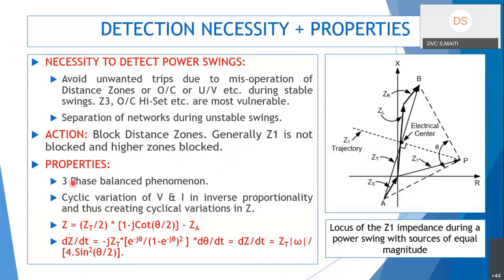Power swing is a three-phase balanced phenomenon with cyclic variation of voltage and current in inverse proportionality, creating cyclic variations in impedance Z. The derivation of the impedance equation is in the last part and can be found in books — Mason is one very lucid book to read on power swing and pole slip.